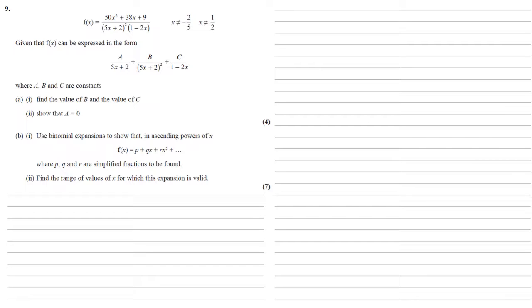Given that f of x can be expressed in the form a over 5x plus 2 plus b over 5x plus 2 all squared plus c over 1 minus 2x, where a, b and c are constants, we need to find the values of b and c.